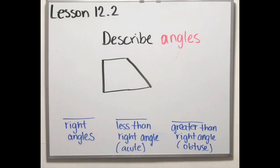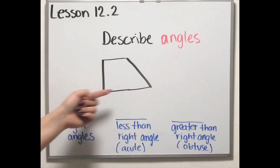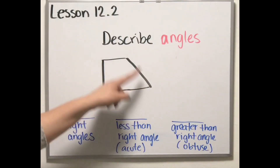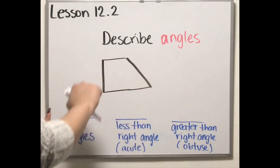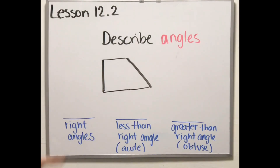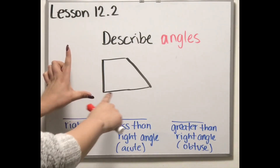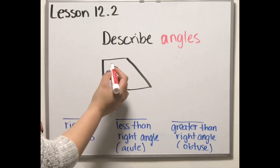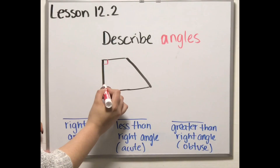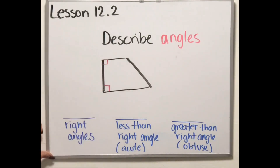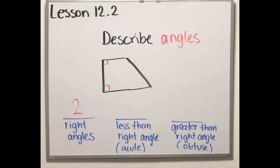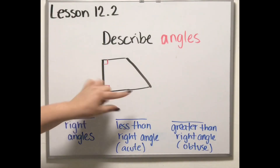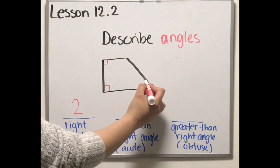Now that we know where angles are and the different kinds that exist, let's find how many angles of each kind are in this particular shape. Let's see how many right angles we have. Remember that right angles always form like an L shape. We have one right here and another one right here — so we have two right angles. Now, how many acute angles, which are less than a right angle, do we have? We have one right here.